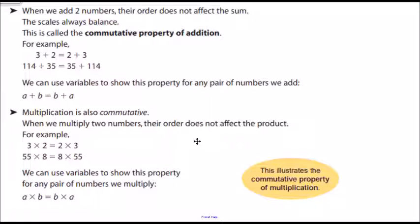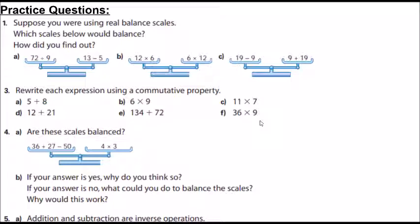That there is the commutative property of multiplication. We can use variables to show this property as well. A can represent any number, B can represent any number, and A times B is the same as B times A.